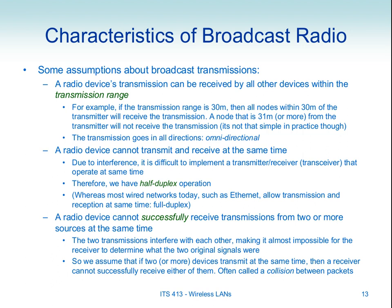Let's define some simplifying assumptions about the physical layer so we can study the MAC layer. First, we assume a defined transmission range — the maximum distance from which another device can successfully receive a transmission. For example, if my laptop has a 30-metre transmission range, anyone within 30 metres can successfully communicate with it; at 31 metres, they cannot.